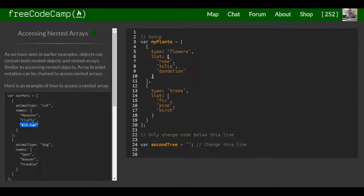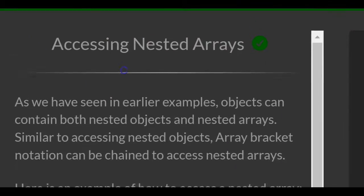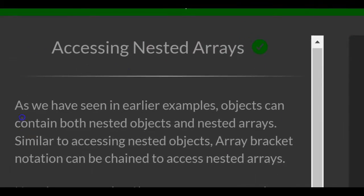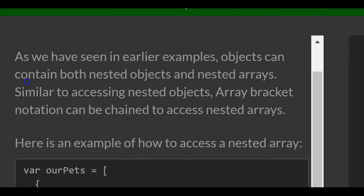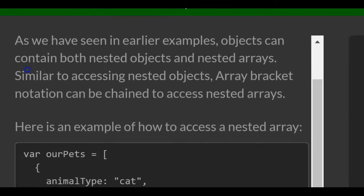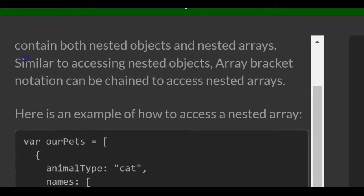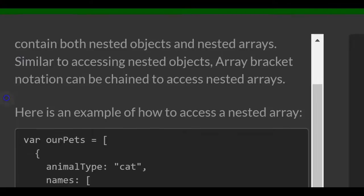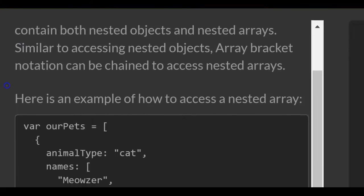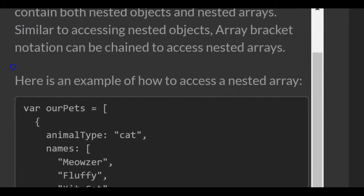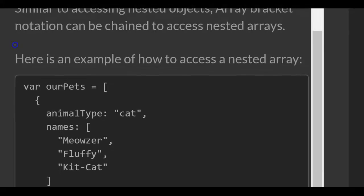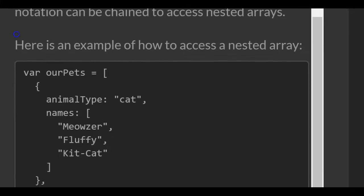This is lesson 90 in the basic JavaScript section of freeCodeCamp. Today we're going to be looking at accessing nested arrays. We have seen in earlier examples that objects can contain both nested objects and nested arrays. Similar to accessing nested objects, array bracket notation can be chained to access nested arrays.